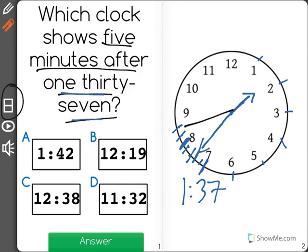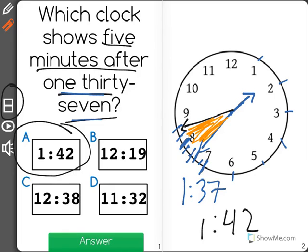The minute hand would be pointed right here. This area I'm shading represents the five minutes, and it would be 1:42, which is answer choice A.